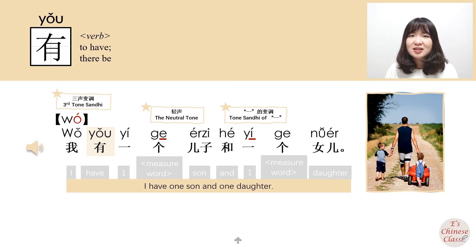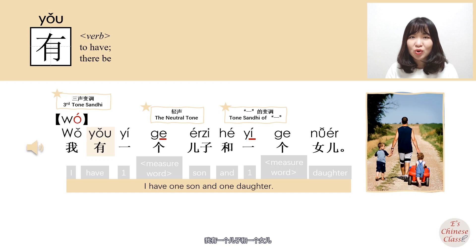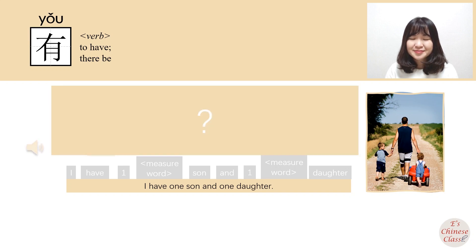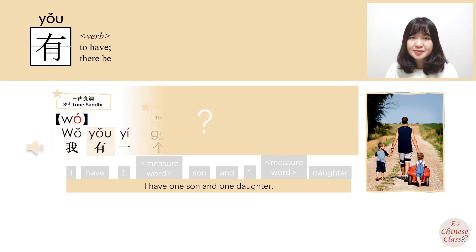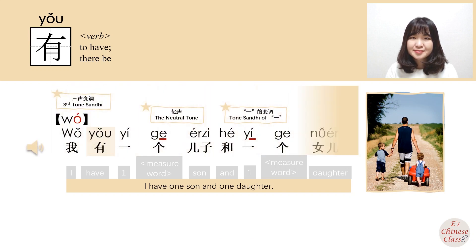我有一个儿子和一个女儿。 (I have a son and a daughter.)